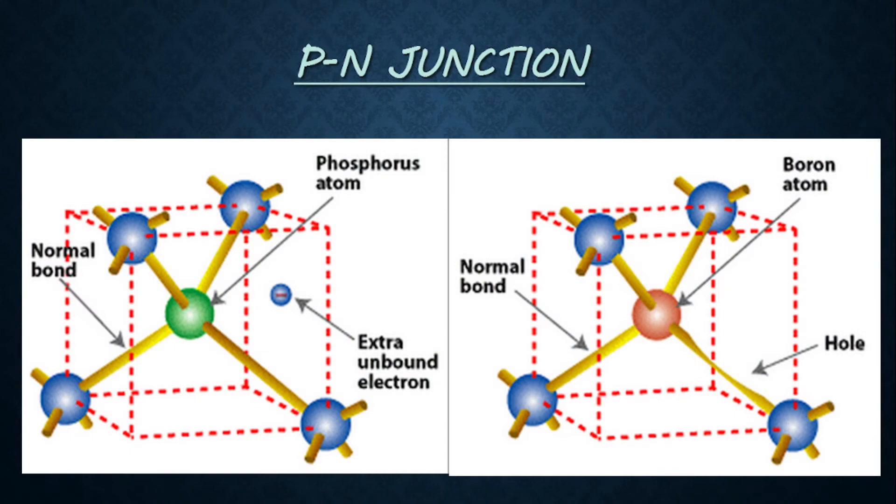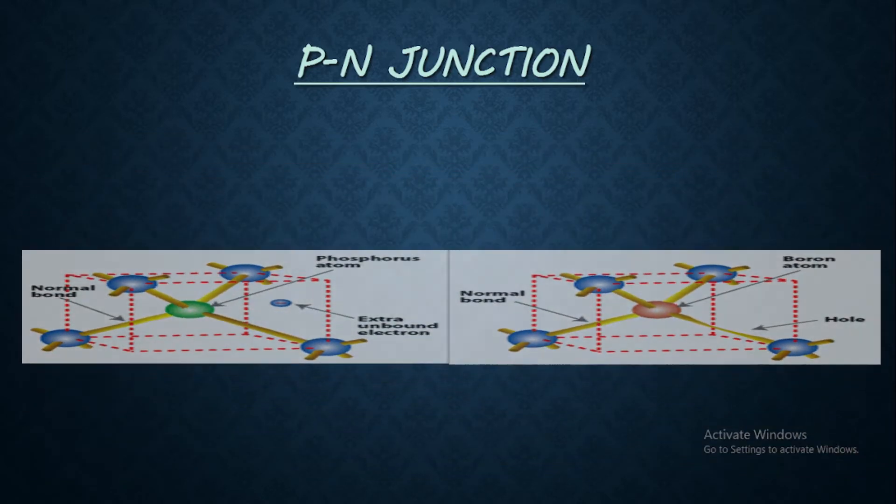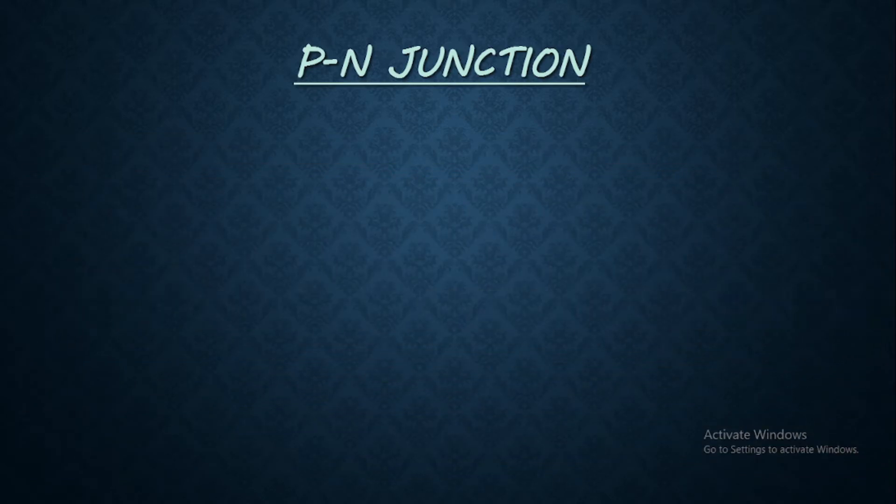And when you consider a trivalent impurity, then holes will be created due to which we can observe positive nature. That is, P-type semiconductor. So what actually is PN junction?